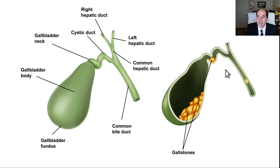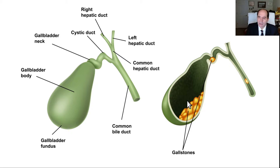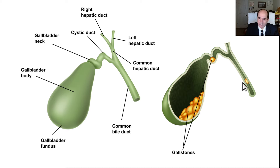The most important thing to know is that high amounts of dietary fat predispose you to forming gallstones, because cholesterol is increased and it will precipitate out of the bile, forming these stones that can cause problems. They can block the cystic duct or the common bile duct. Cystic duct blockage by a stone is a lot more common than common bile duct blockage.